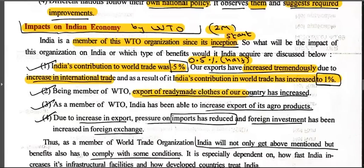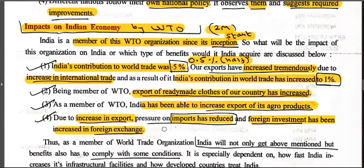Being a member of WTO, exports of ready-made clothes of our country have increased — clothes made in India now go to other countries as well. India has also been able to increase exports of its agro products — agricultural goods that were only for India are now sold abroad too. Due to increase in exports, pressure on imports has reduced and foreign investment and foreign exchange have increased. Any country's strategy is always to maximize exports and minimize imports so that the country does not go into debt.